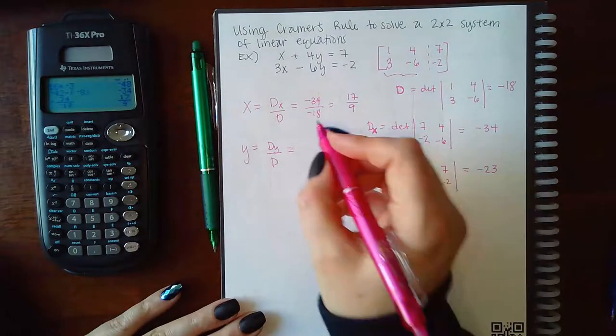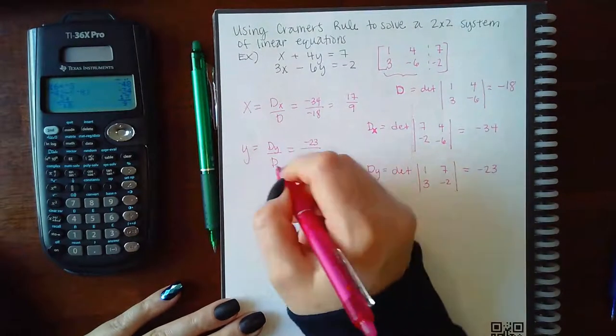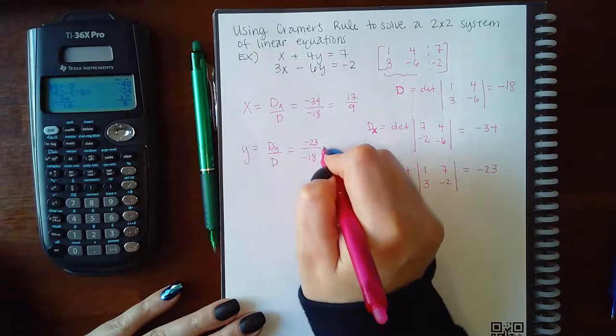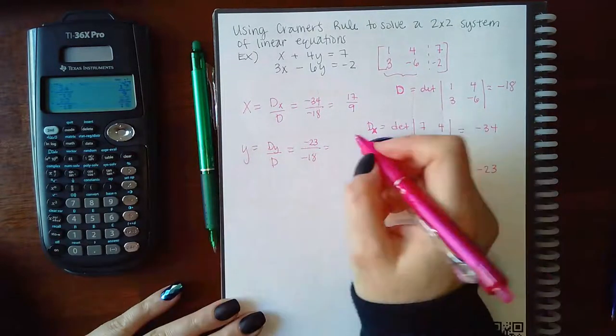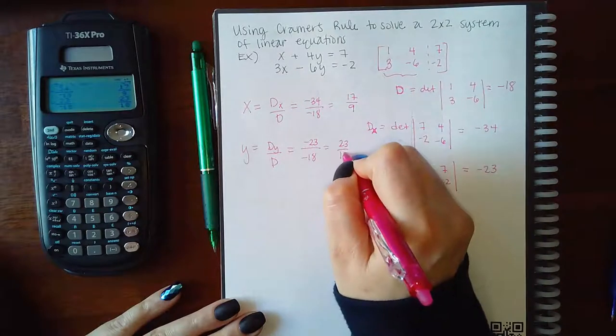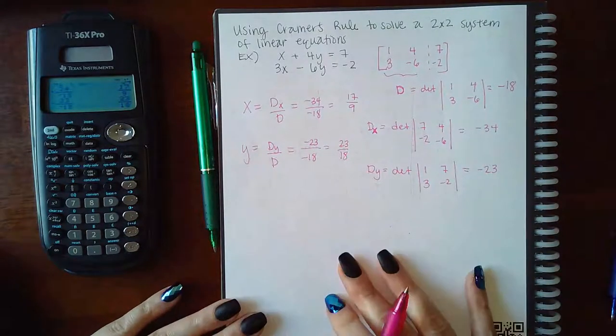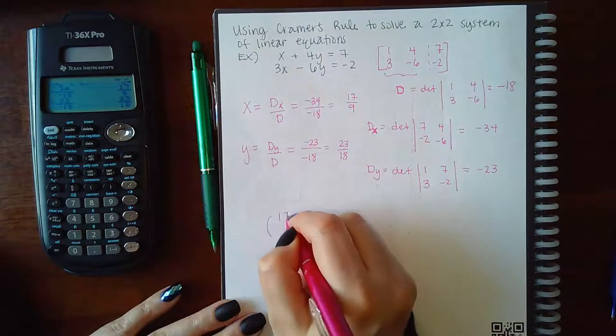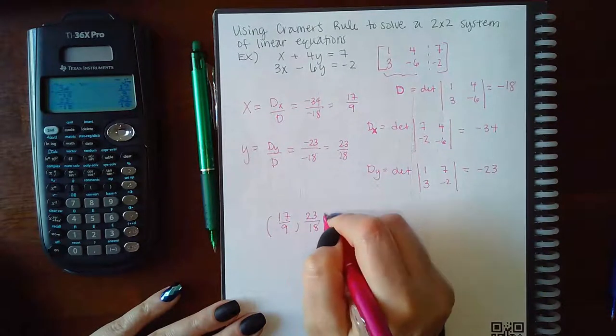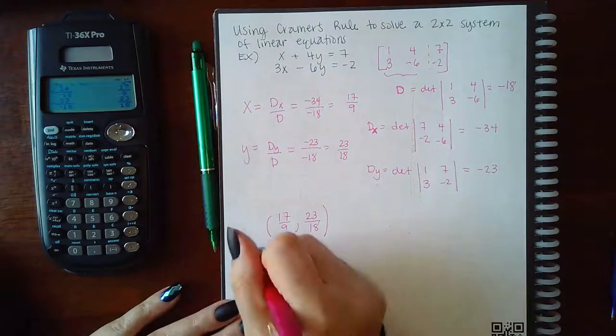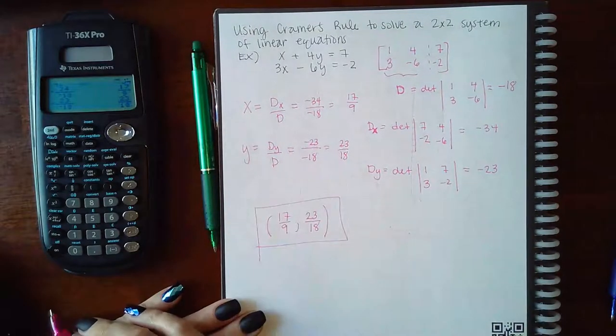And if I divide those, I get 17 over 9 as my X coordinate. And then DY is negative 23, D is negative 18. And so I just get positive 23 over 18 as my Y coordinate. So my solution here is going to be 17 over 9 and 23 over 18. That's the final answer.